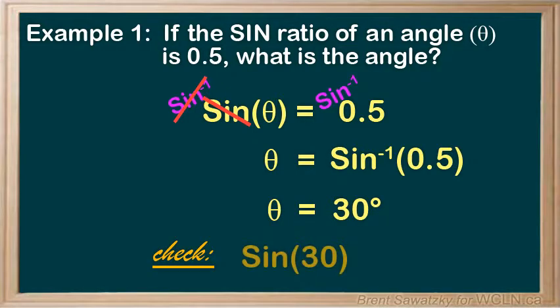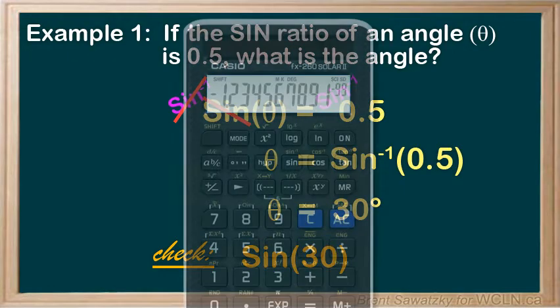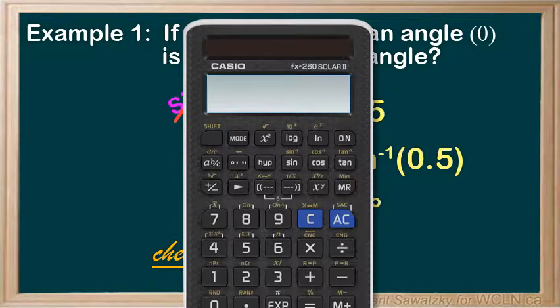If we sign our new angle, that is 30 degrees, we should get back to our ratio of 0.5. So, to our calculator.